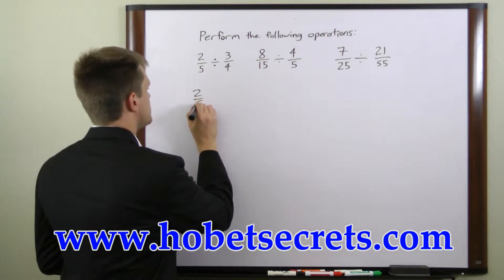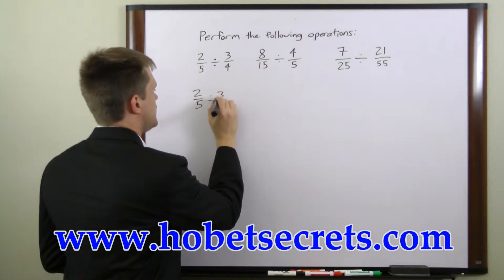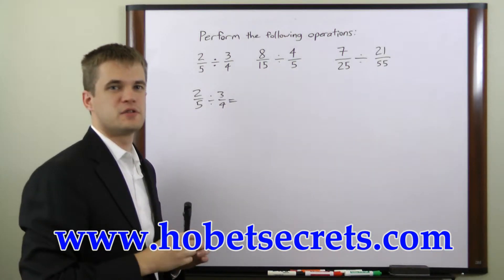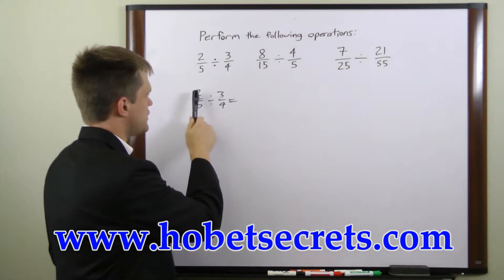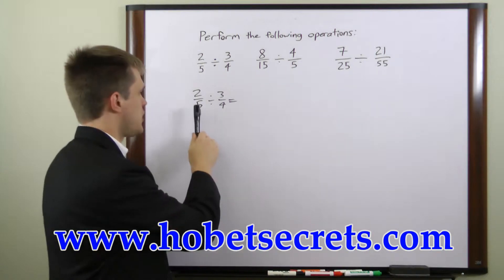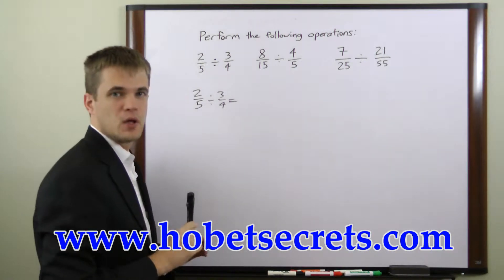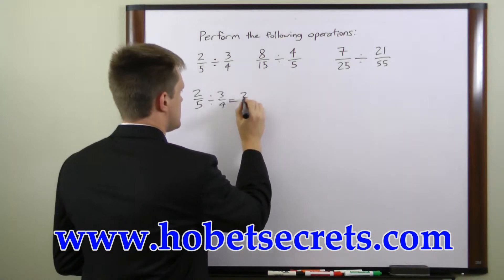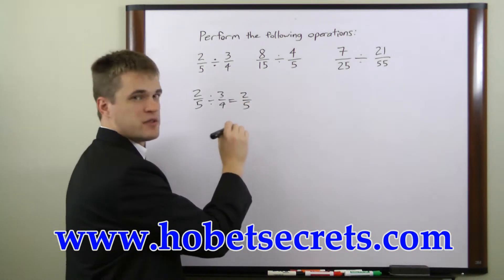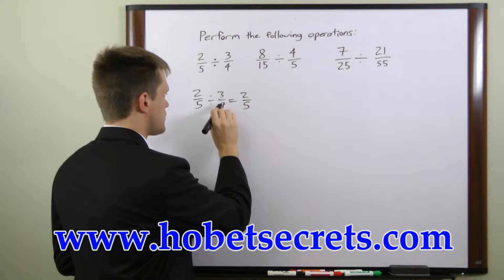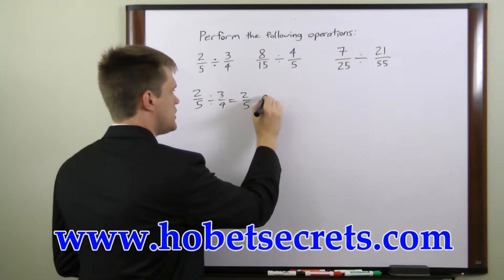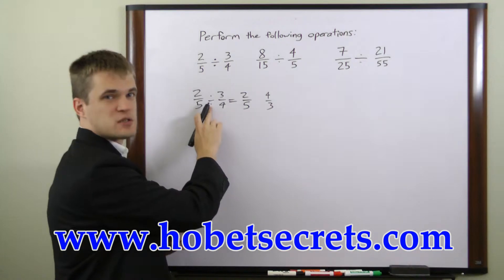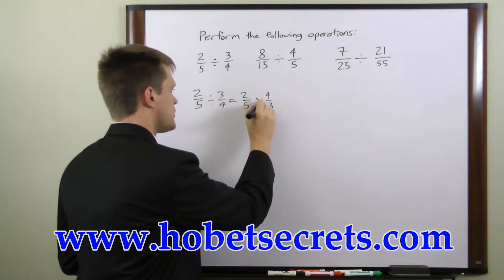Two-fifths divided by three-fourths. Now if you were multiplying these two you would just take the product of the two numerators and the product of the two denominators. But when you're dividing what you have to do is take the reciprocal of the second fraction. So the reciprocal of three-fourths is four-thirds and then you can change this division sign to a multiplication sign.